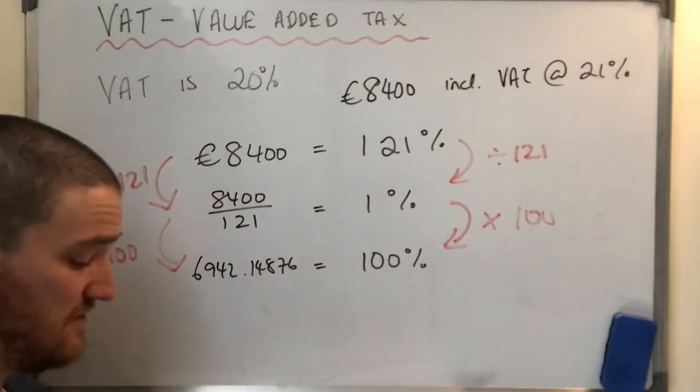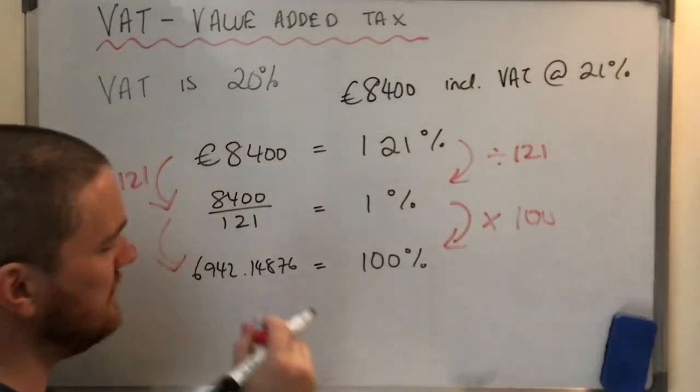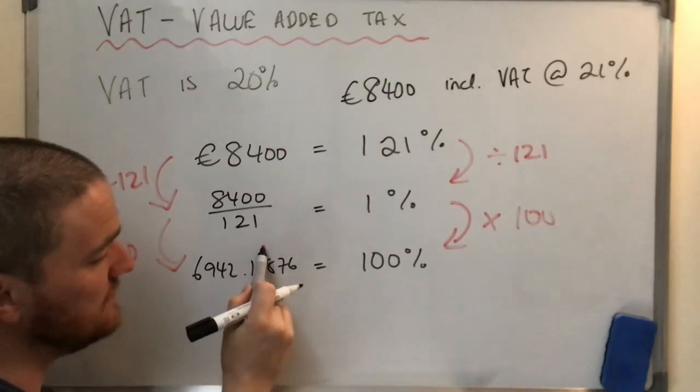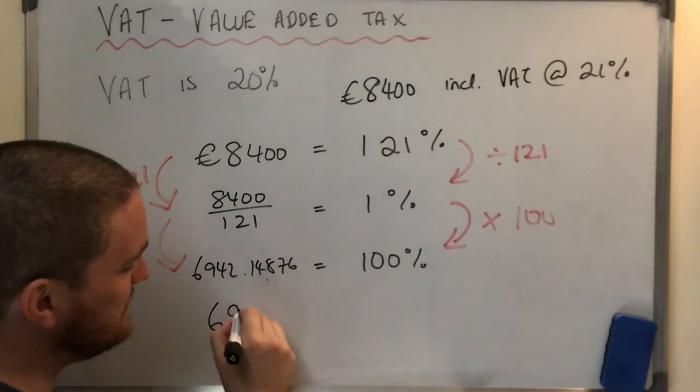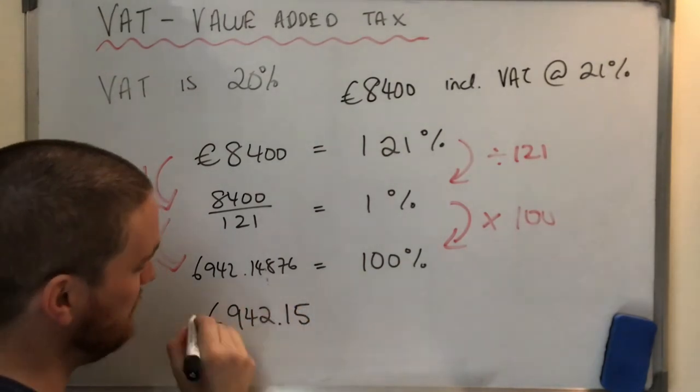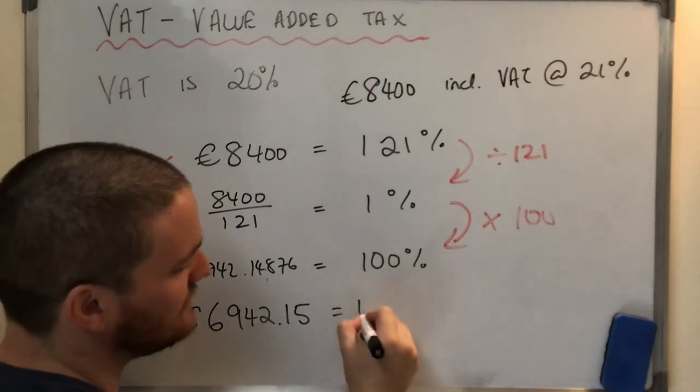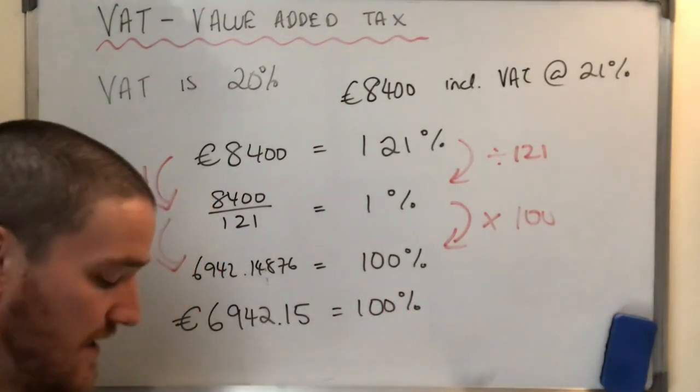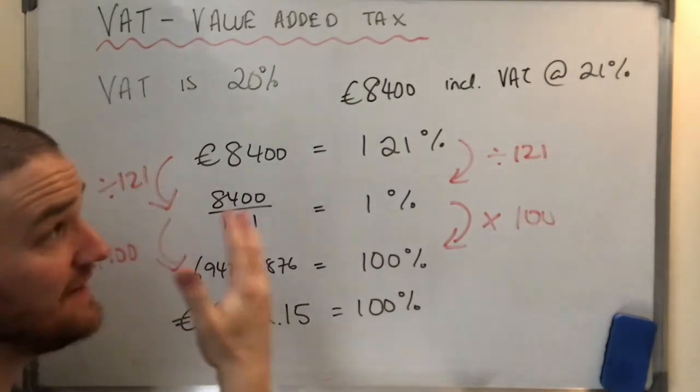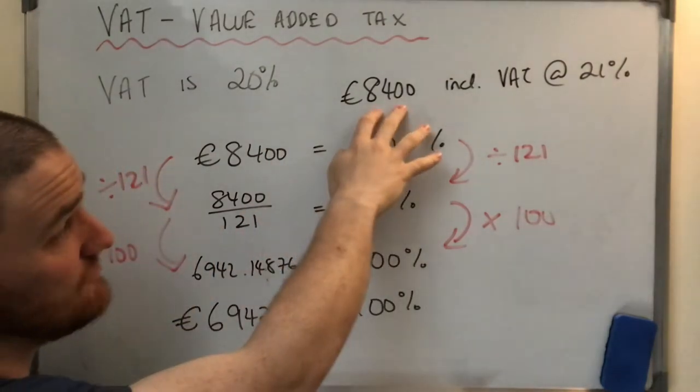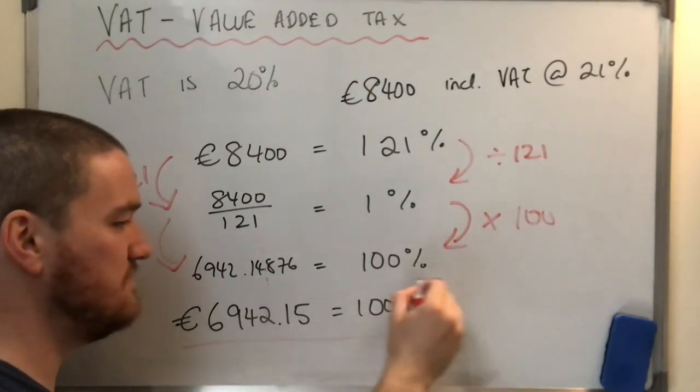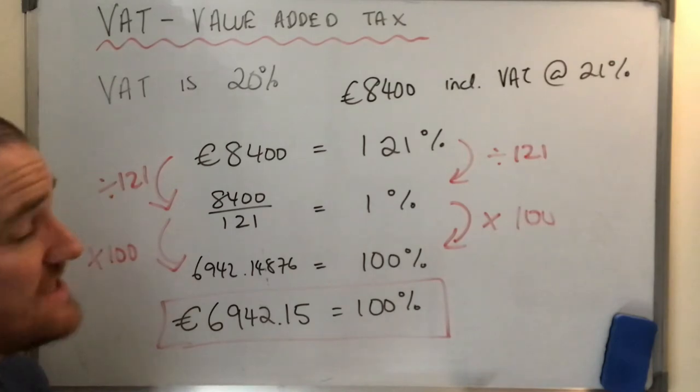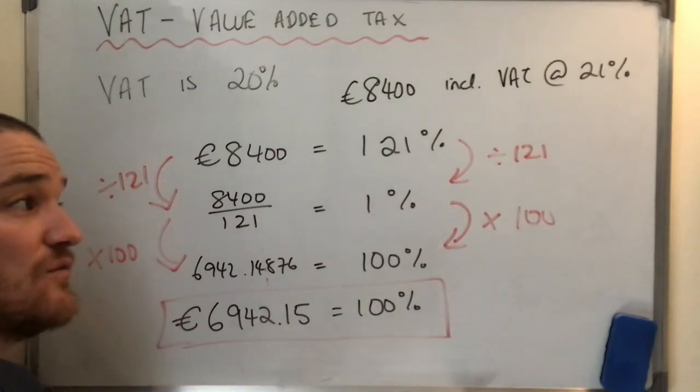So let's put it in. I get 6942.14876. Ugh, nah, that's not lovely. But let's just have a look. So I'm going to, because it's money, I'm going to round to two decimal places. So does the 8 round up to four? It certainly does. So I get €6942.15. And that will equal 100%. Now, that means that the band are taking home that much, and that the government will take home 8,400 take away that number. Whatever that is, we don't really care. I'm going to ask first. So there are the two ways that VAT can be asked, either the VAT before or the VAT after. You have to read the question carefully, and then you'll be able to figure out which way to do it.